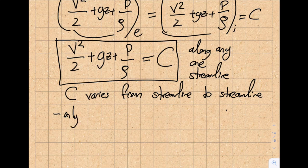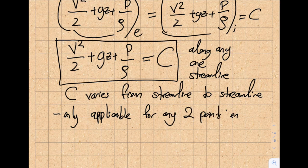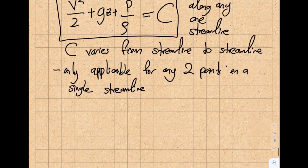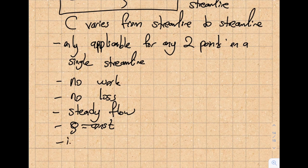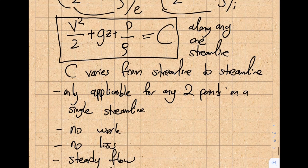Let me recap the assumptions we really need to be careful about. First, Bernoulli's equation is only applicable for any two points on a single streamline. Second, no work. Third, no loss. Fourth, steady flow — that's where the conservation of energy derivation started. Fifth, density is constant, which is a good assumption for liquids but may not hold if thermodynamic state changes significantly. Sixth, inviscid flow — viscous effects are neglected.